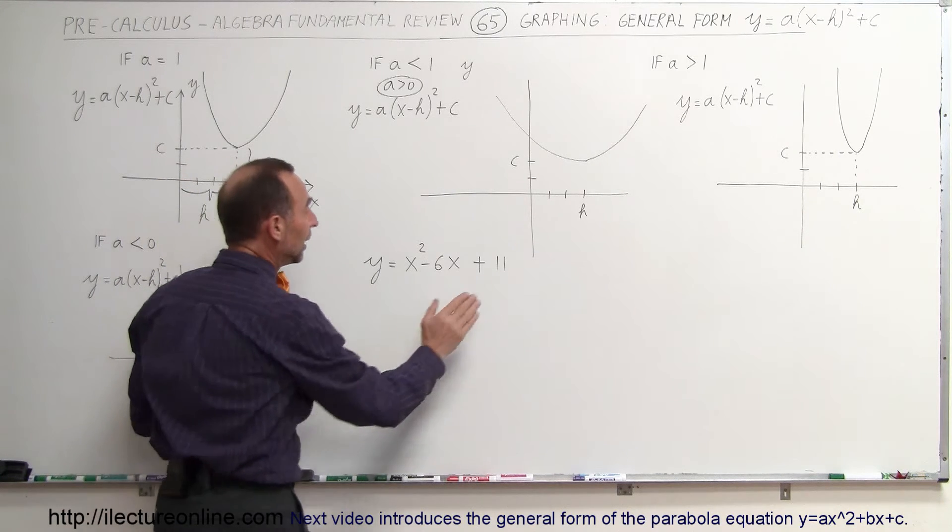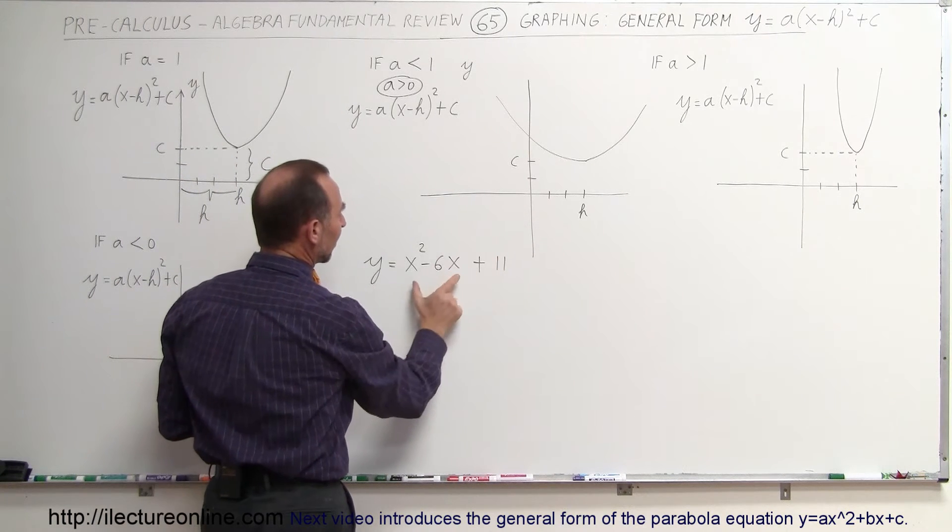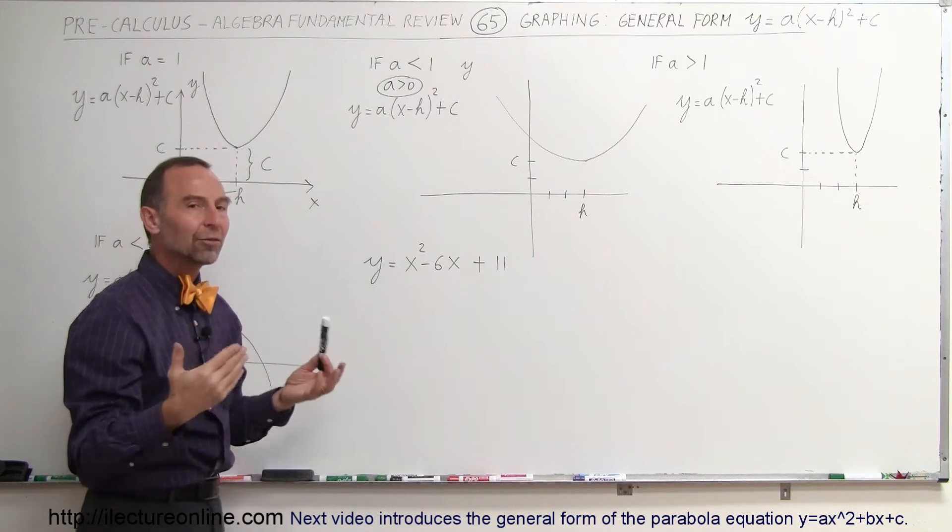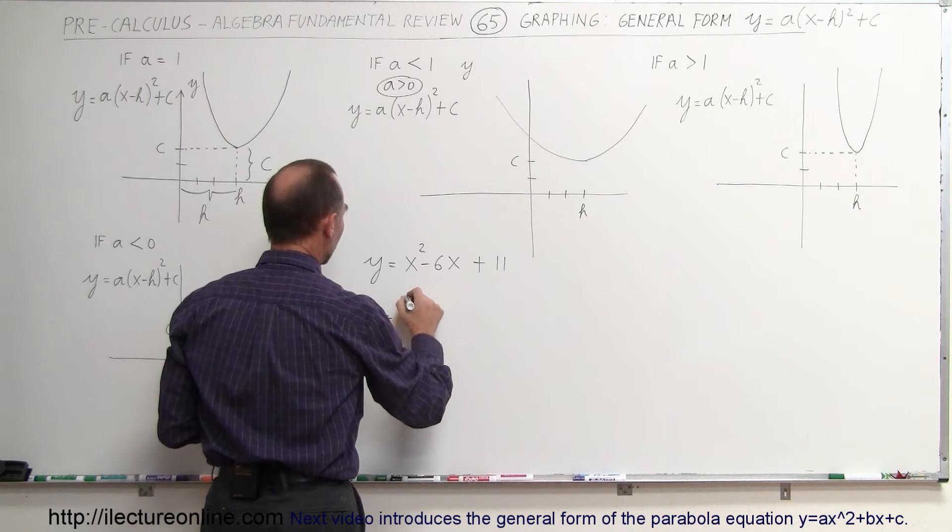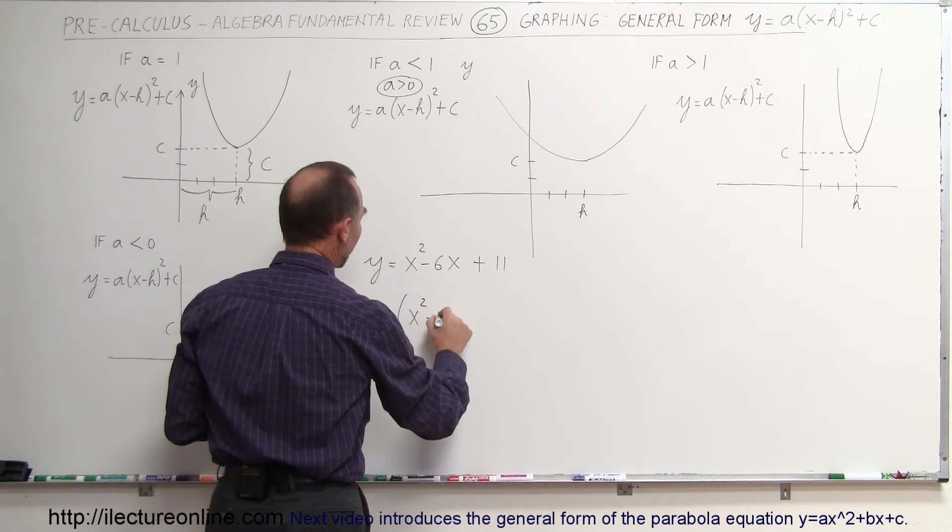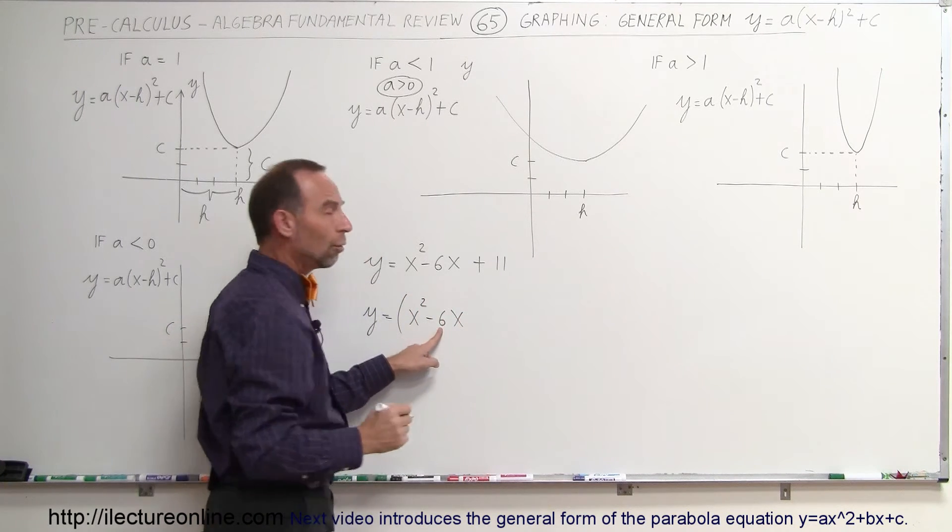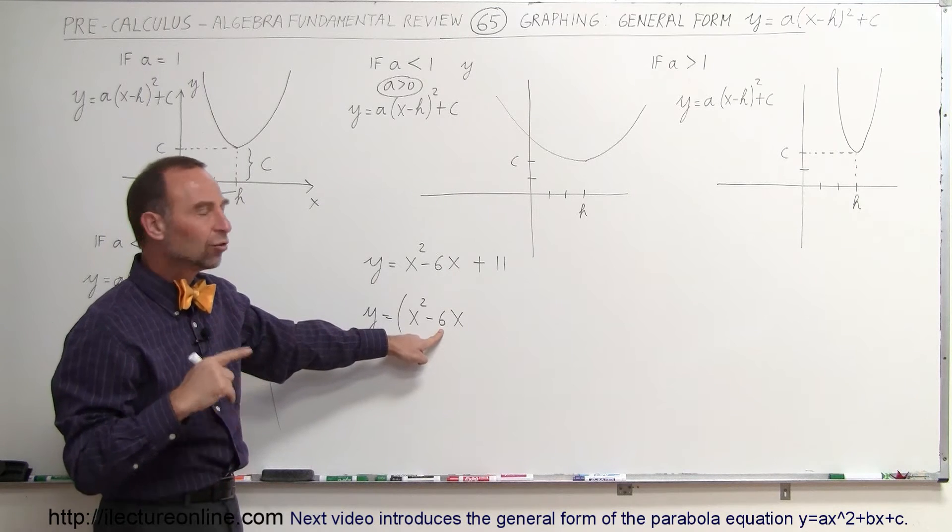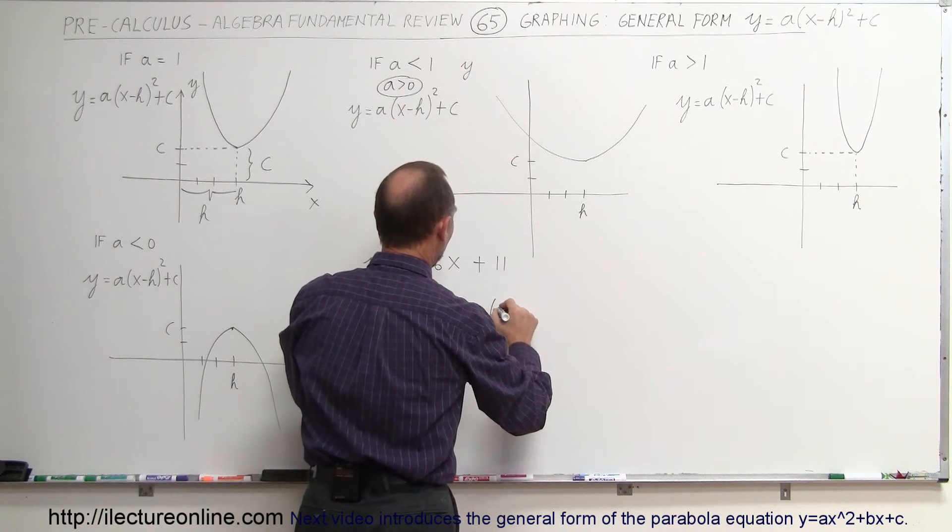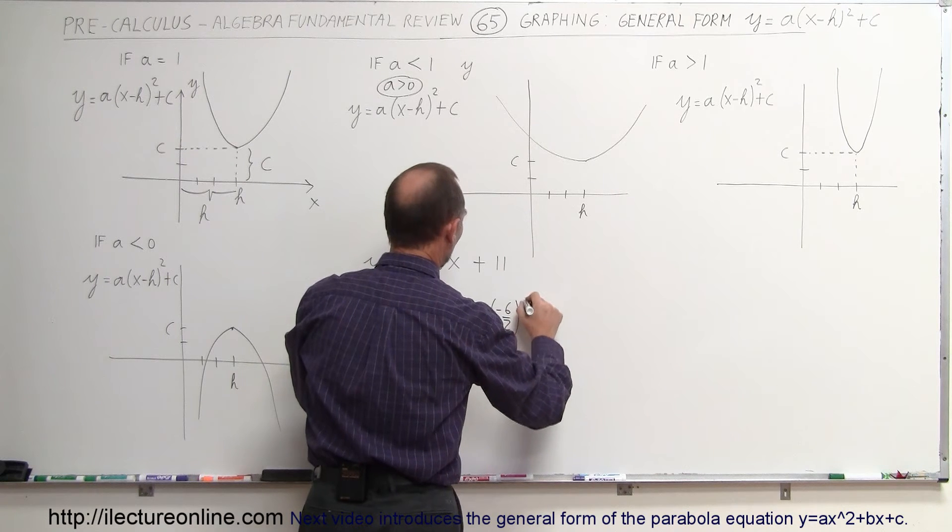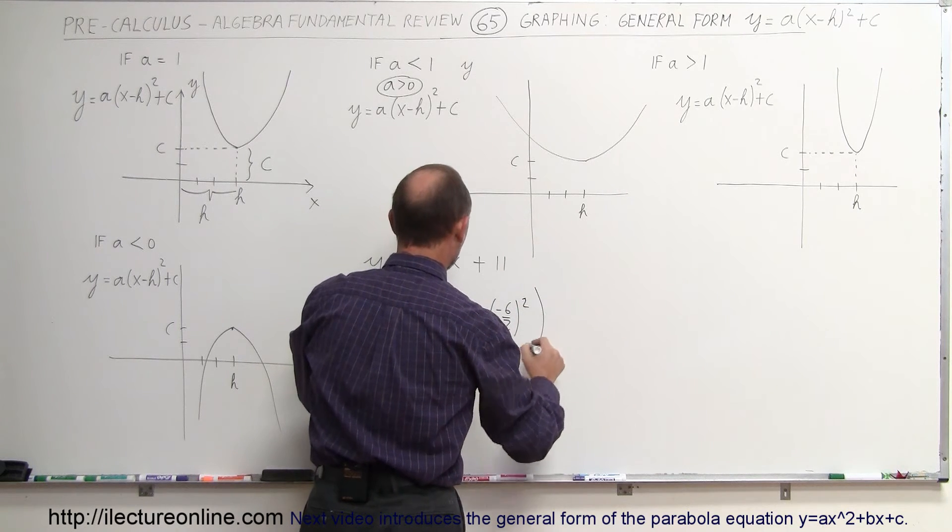We're going to ignore the plus 11 here and look at this and say, what would make this a nice binomial that we can square? We have y equals the quantity x squared minus 6x. Take this coefficient, divide it by 2, and square it. So that would be plus the quantity (minus 6 divided by 2) squared.